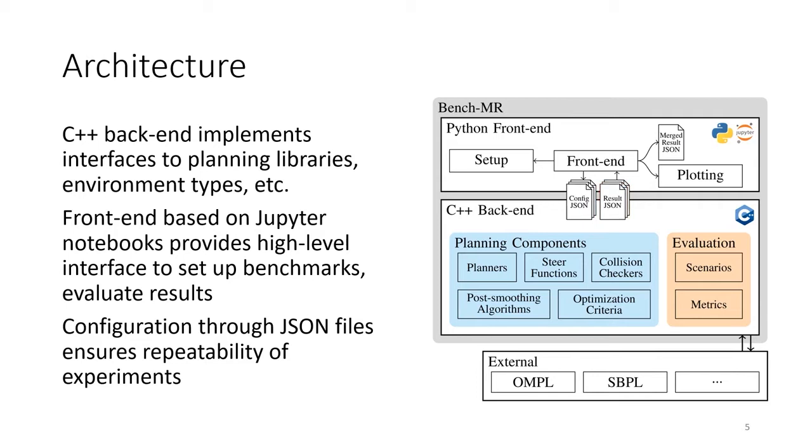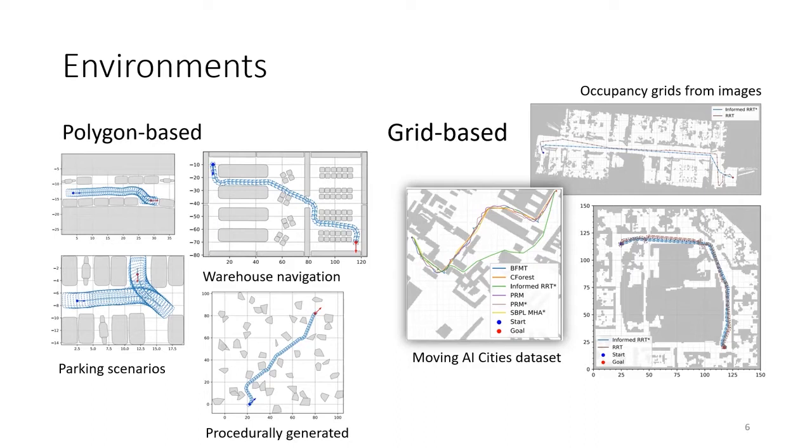As part of the motion planning components, we provide different types of environments. Polygon-based environments represent obstacles as convex polygons, which can be loaded from vector graphics files, such as SVG files. Grid-based environments represent obstacles as grid cells that are either occupied or free, and can be loaded from grayscale image files. We also implement various techniques of procedurally generated environments.